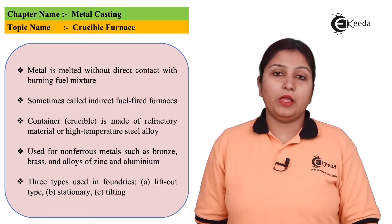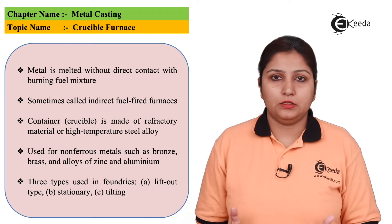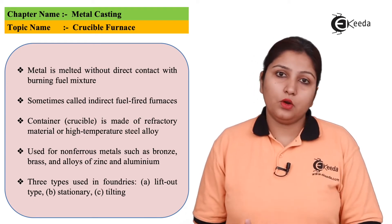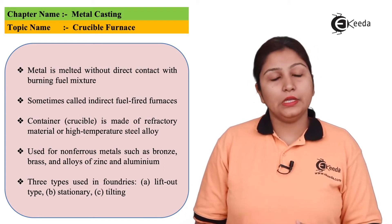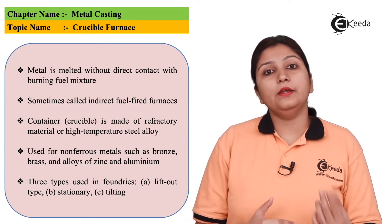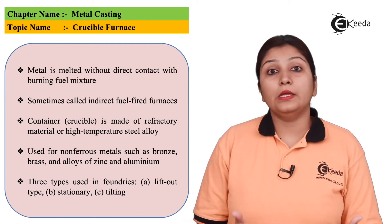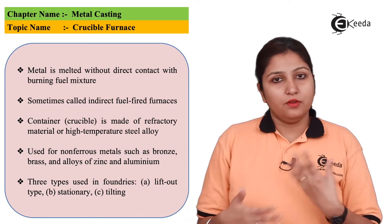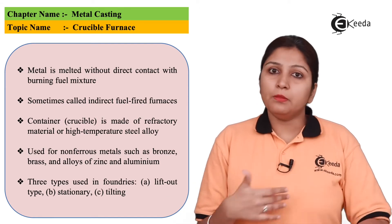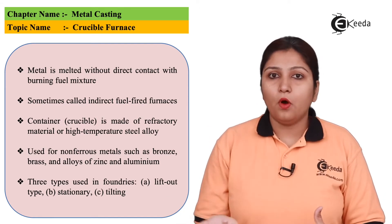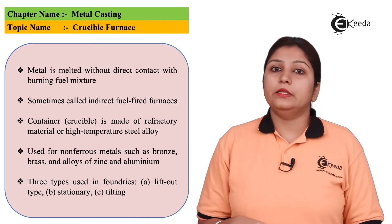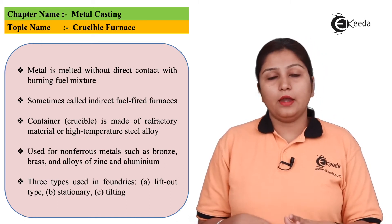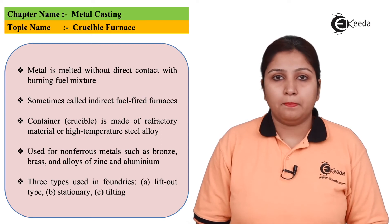Heat is provided via different means in every furnace. In a crucible furnace, there is no direct contact of heat with your crucible. An indirect fired form furnace kind of crucible is used — it heats your crucible indirectly, and melting of the metal is done.